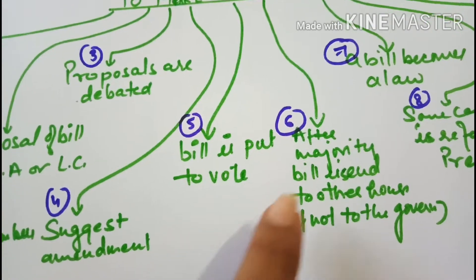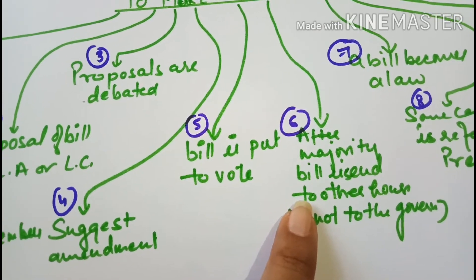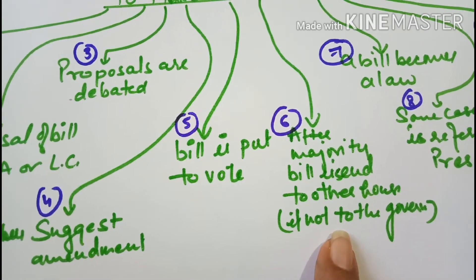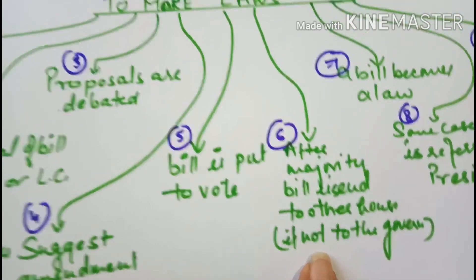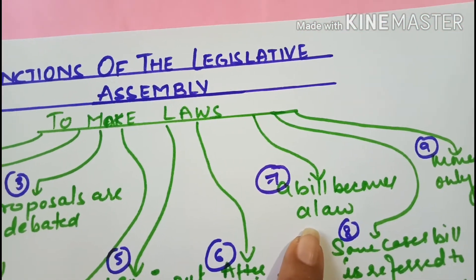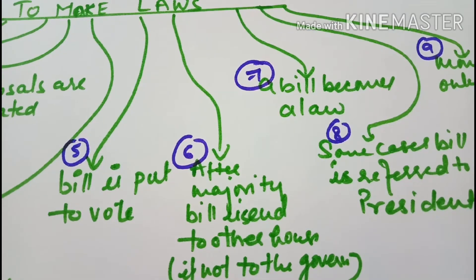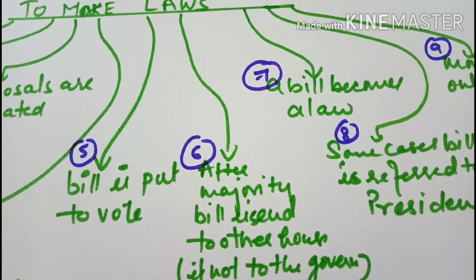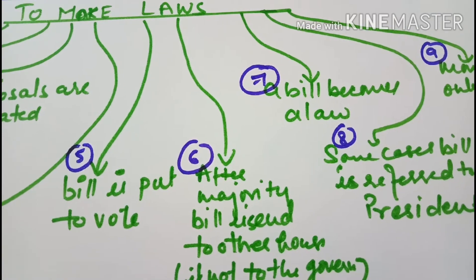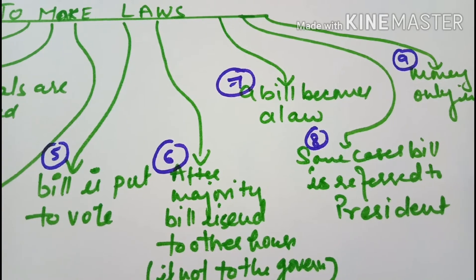Jahan par same procedure chalta hai. Agar kisi state mein sirf ek hi house hai, toh phir yeh bill seedha governor ke paas bhej diya jata hai. Aur uske baad governor ki approval ke baad yeh bill law ban jata hai. Kuch cases mein assemblies se pass hone ke baad bill president ko bhi bheja jata hai, aur uske baad woh law ban jata hai.